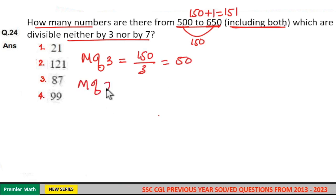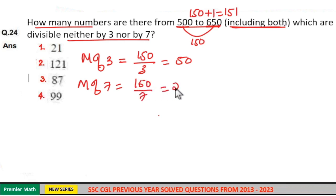And multiples of 7 between 500 to 650: the difference 150 divided by 7. 7 goes 2 times in 14, remaining 10, 7 goes 1 time in 10. Quotient is 21.